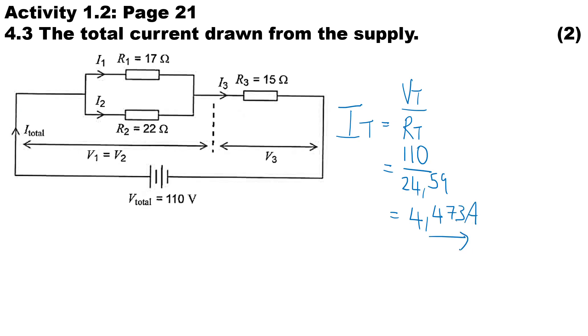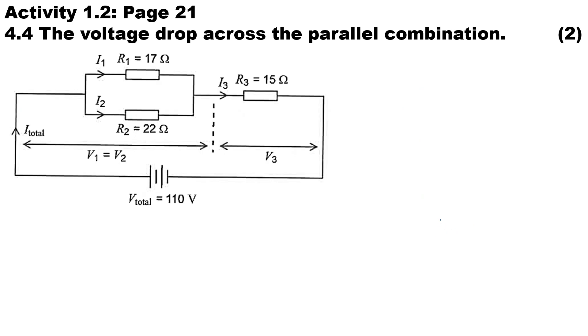Okay, moving on to 4.4: calculate the volt drop across the parallel combination. So the voltage across the parallel will be equal to... now if you have a look over here, I total enters the entire parallel branch and leaves the parallel branch, so we're going to be using I total times the resistance of the parallel branch.